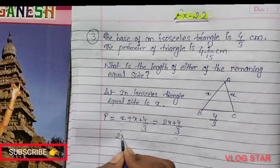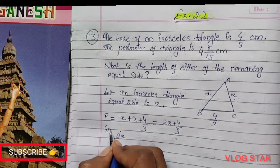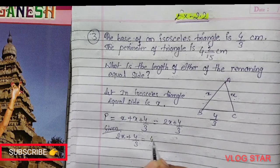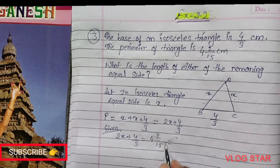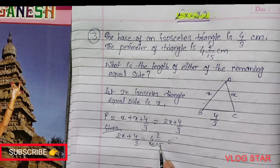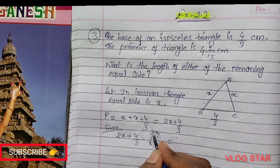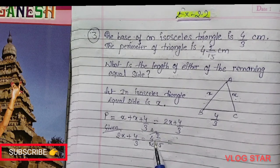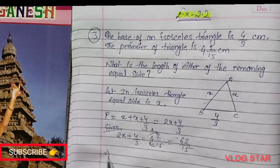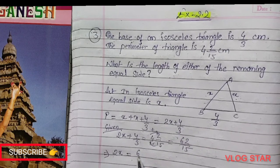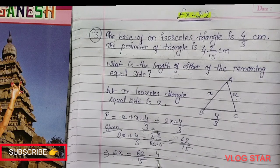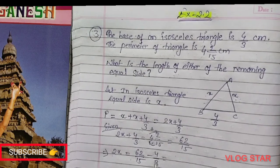I write here 2X plus 4/3 equals 4 and 2/15. If I solve it, we multiply 15 with 4, which is 60, and then add numerator 60 and 2, which is 62 by 15. So we have 2X equals 62/15, and when plus goes to the other side it becomes minus, so minus 4/3.